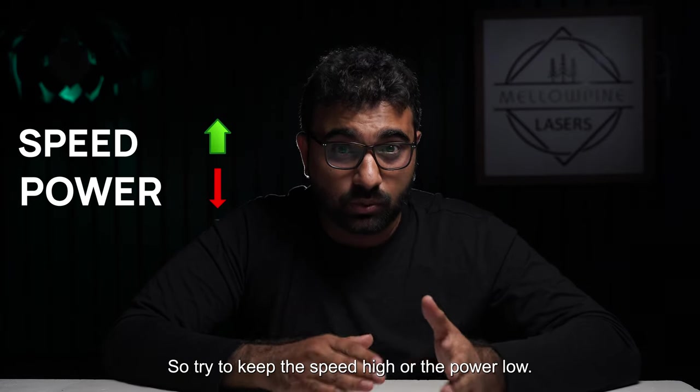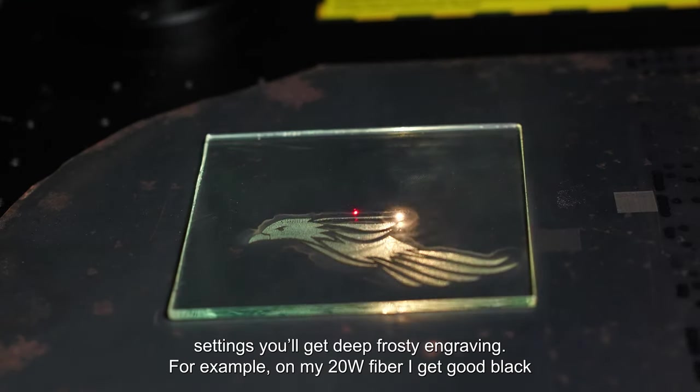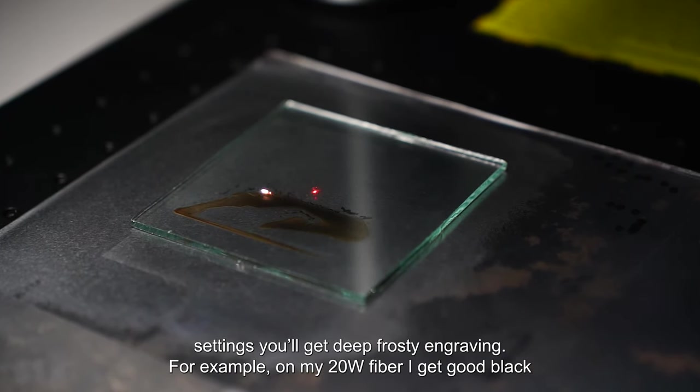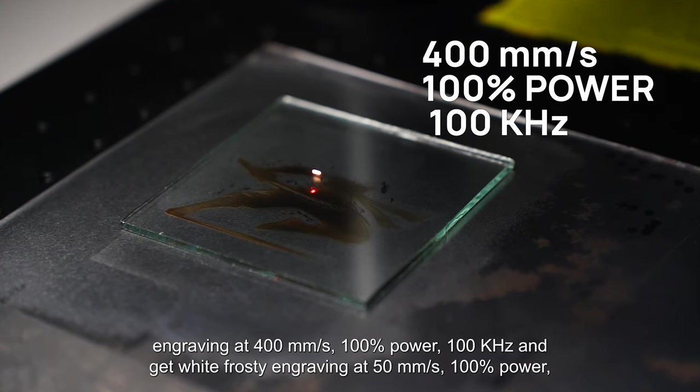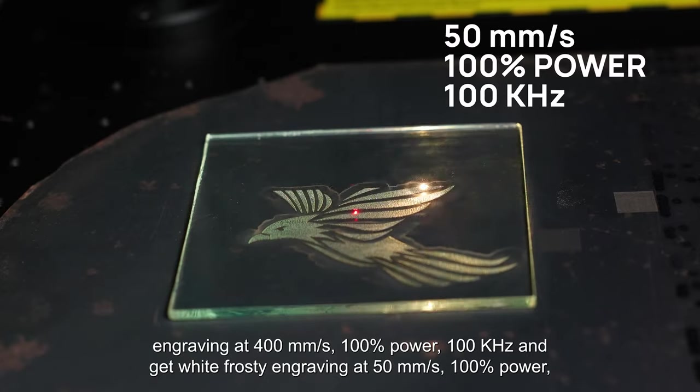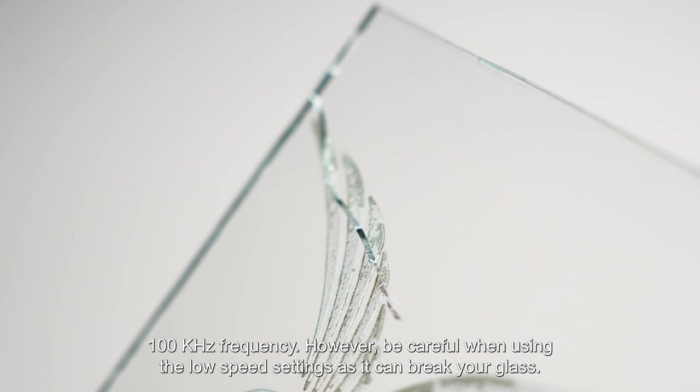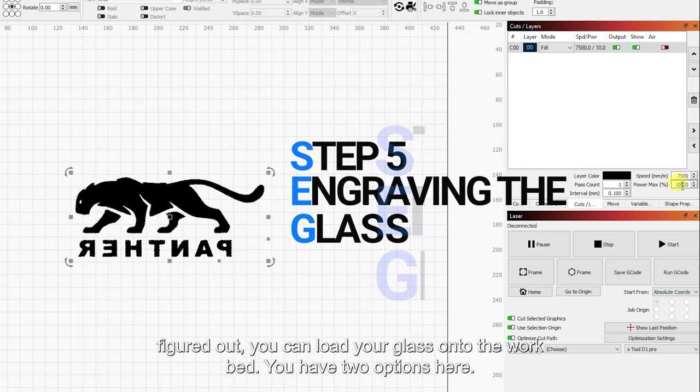On a fiber laser, if you use high speed settings you get black engraving, and if you use low speed settings you'll get deep frosty engraving. For example, on my 20 watt fiber, I get good black engraving at 400 millimeter per second, 100% power, and 100 kilohertz frequency. And I get white frosty engraving at 50 millimeter per second speed, 100% power, and 100 kilohertz frequency. However, be careful when using the low speed settings as it can break your glass.